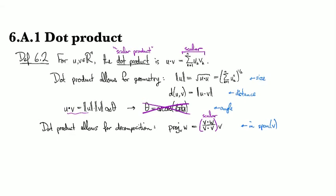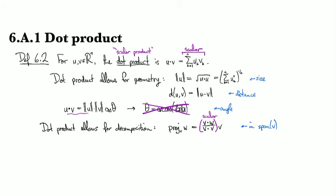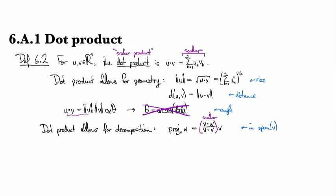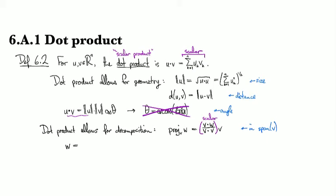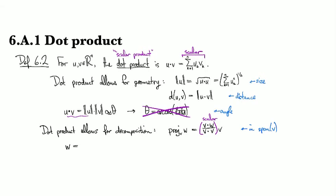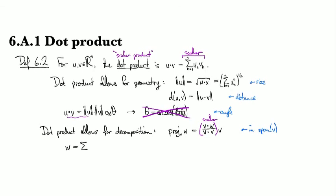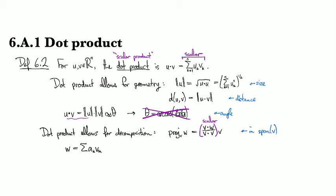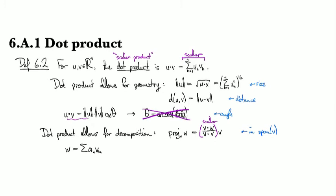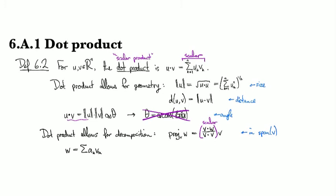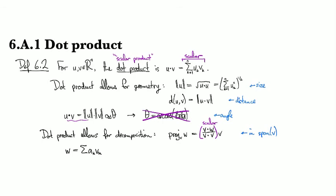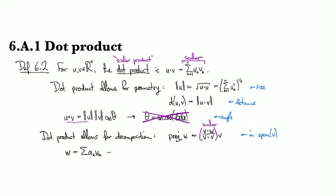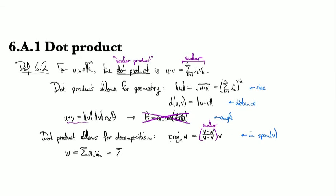Now once we can project w onto one vector v, then we can project it onto a bunch of vectors. So what I mean is that we can break w down. Suppose you know that vk is a basis. Then you know that there's going to be some ak's, some coefficients, such that you can represent w as a linear combination of those vk's. How do you find the ak's? Well, go out and do a load of computations. Good luck to you.